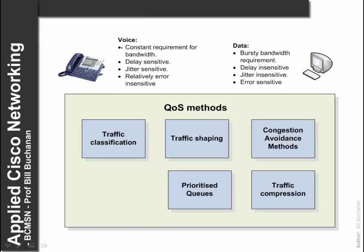The key factors for voice are that it requires a constant need for bandwidth. The signals themselves typically are constant — not a great deal of bandwidth per signal, but there is a constant need for it. We want to stop data coming along and bursting onto the network while we are transmitting voice data. Voice is also delay sensitive — it matters how long it takes each intermediate device to process the voice data. It is jitter sensitive but relatively error insensitive; the odd error in a data packet doesn't really matter that much because the voice data can be easily filtered.